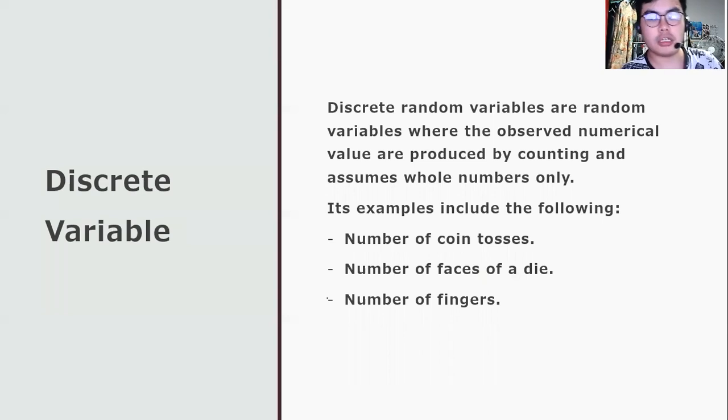Its examples include the following: the number of coin tosses, the number of faces of a die, and the number of fingers. When we say number of coin tosses, we can toss the coin once, twice, thrice, as long as the number of times of tossing the coin will be a whole number, which makes the number of coin tosses qualified as a discrete variable.